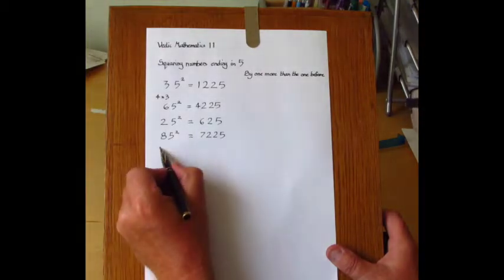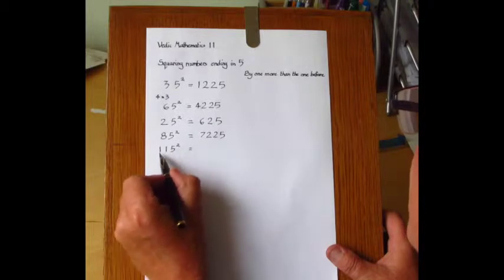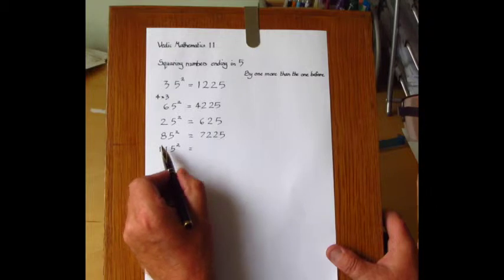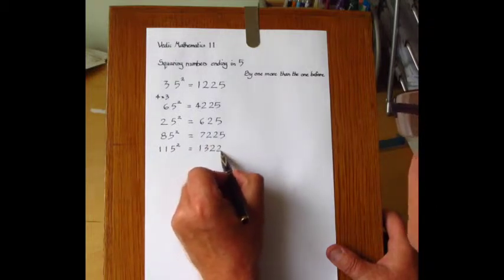What happens when we have 115 squared? Well, we can treat the one before as this single number, 11. And so multiply 11 by 12, giving 132, then 25, so 13225.